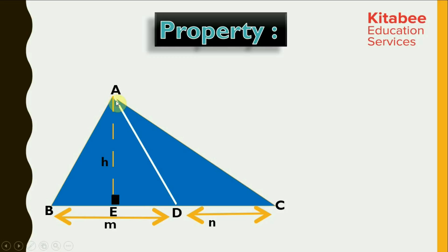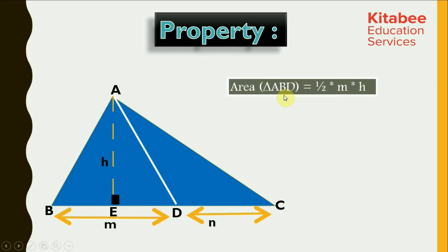For triangle ADC as well, AE would be the height. For triangle ABD, AE would be the height. And if we consider the triangle ABC, then AE would again be the height of this triangle. So, area of triangle ABD would be half of base into height, which is half of M into H.